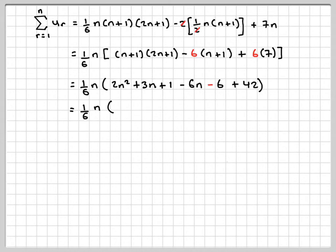Then we've got 1 sixth n, so we've got 2n squared, and we've got 3n take away 6n, which gives me minus 3n, and then we've got 1 minus 6 plus 42, which gives me 37.